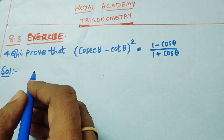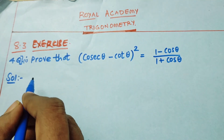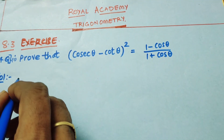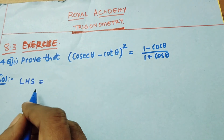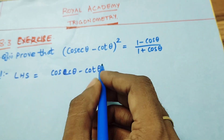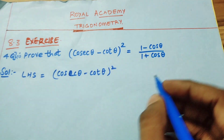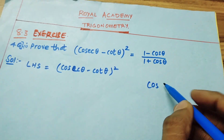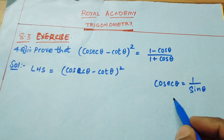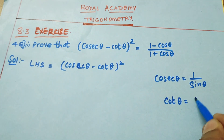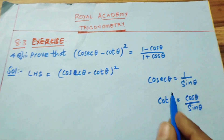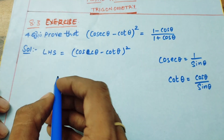Hi everyone, today I'm going to explain one problem from trigonometry from Class 10. We will take the LHS and prove that it is equal to the RHS. The LHS is (cosecant θ − cot θ)². We know the relations: cosecant θ = 1/sin θ, and cot θ = cos θ/sin θ. We use these relations and substitute here.